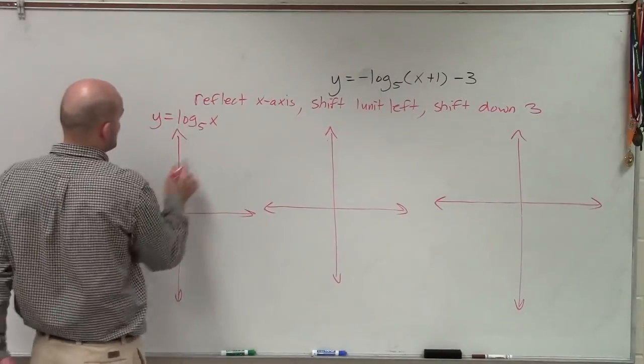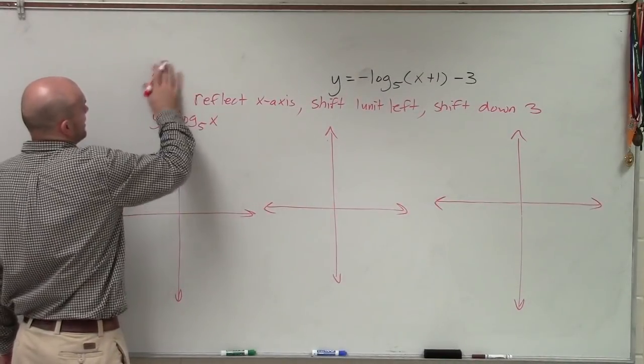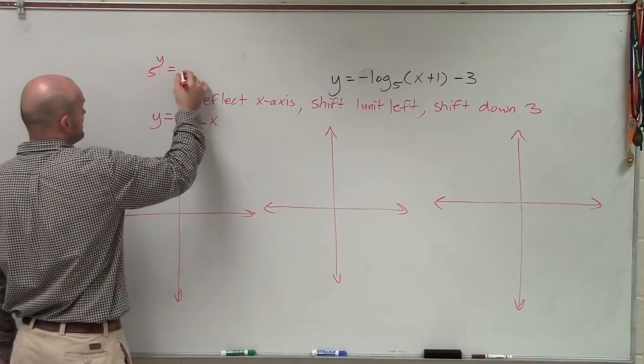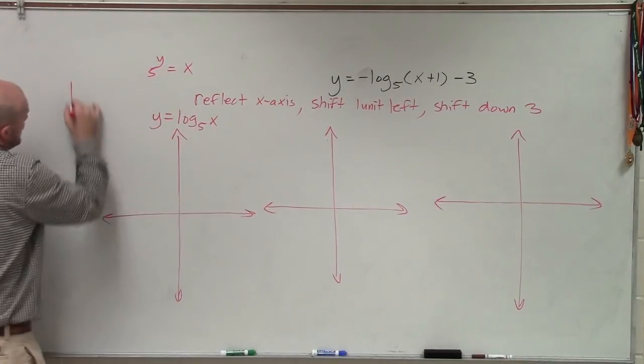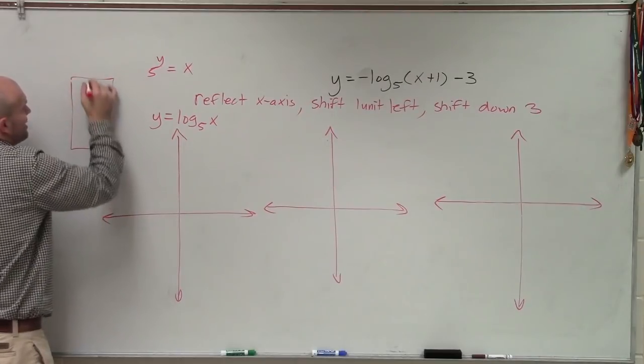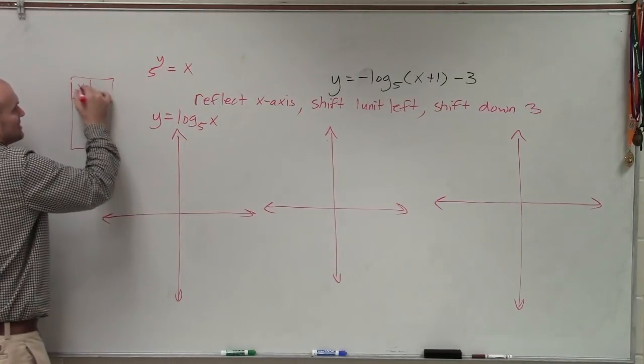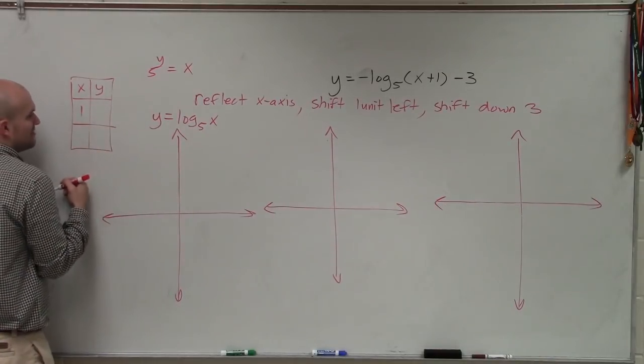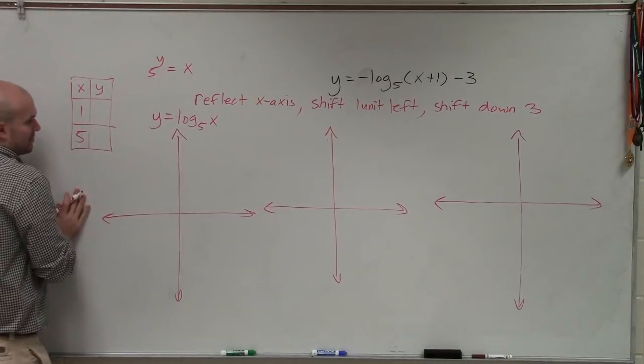So I have a logarithmic equation. I really like to write that in exponential form. So 5 raised to the y equals x. Therefore, I can now create a table of values that I can plot my initial graph. So I'll say x equals y. And when I'm choosing my points for y, I want to choose points that are going to make x equal 1 and x equal the base of my exponent.